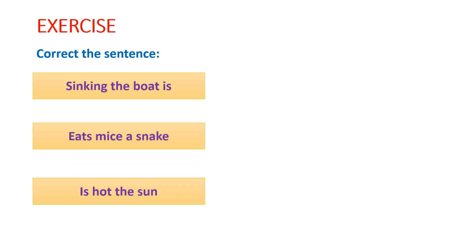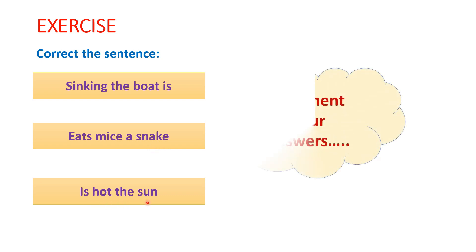There is one more exercise for you. You have to correct the below sentences — we have given three sentences which are not in the correct order. You have to identify the parts of the sentence and arrange them in the correct order. The sentences are: 'Sinking the boat is.', 'Eats mice a snake.', and 'Is hot the sun.' Please try to correct the sentences and comment your answers.